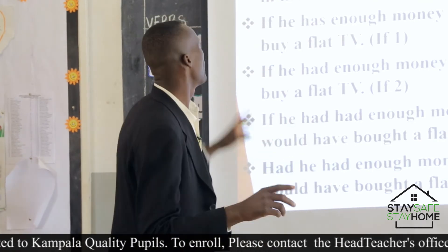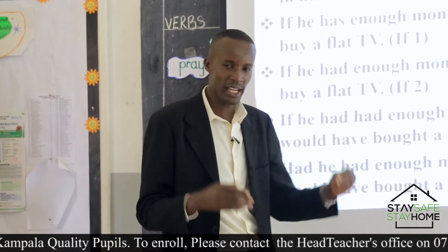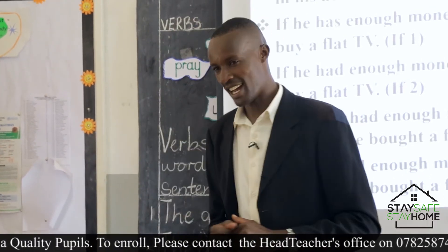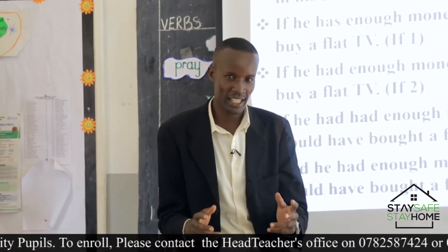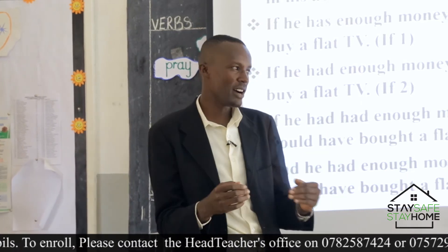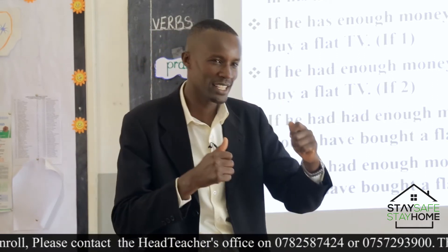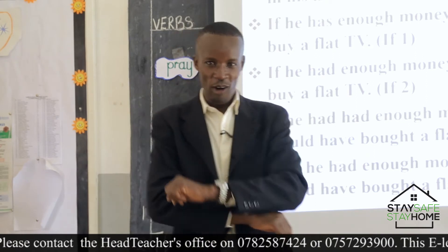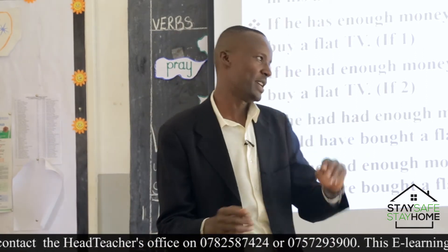We talked about if one, where we find the chances of fulfilling that condition are available, and therefore the result can happen. Then when we went to if two, we said the chances of fulfilling this condition are not there, and therefore the result will never happen. And then when we talked about if three, we said the chances of fulfilling this condition were there, but now over, and since they are over, the result cannot happen.